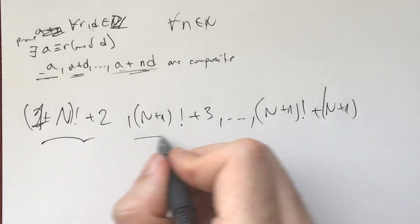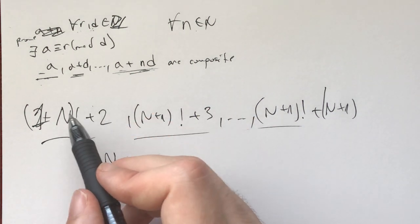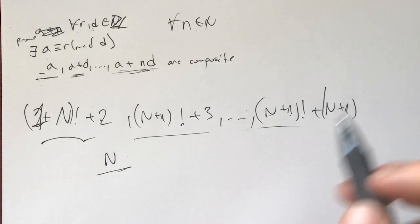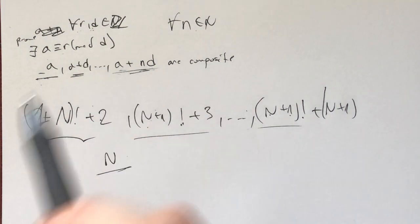This is a sequence of n consecutive positive integers, all of which are composite, like this one's divisible by 2, this one by 3, this one by every one of them by i, this one by n plus 1. Now if you haven't solved this, take five minutes and try to apply this to our problem.